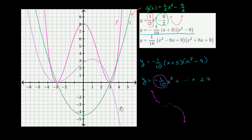Which of these graphs has that end behavior? It's pretty clear that h of x does: when x is very negative, h of x is positive, and when x is very positive, h of x is very negative. It's the only graph with that behavior. We can also verify using the y-intercept: when x equals 0, y equals 2.7 — and we can see that is indeed the case for h of x. So that gives us confidence as well.